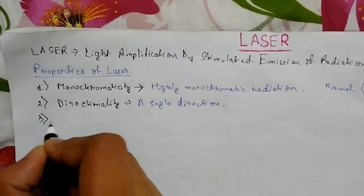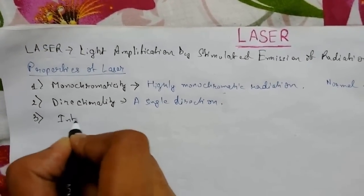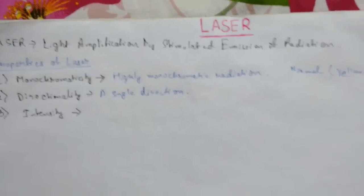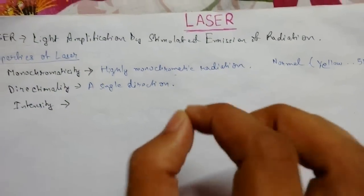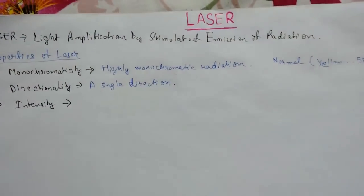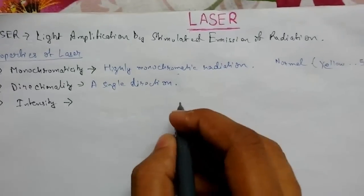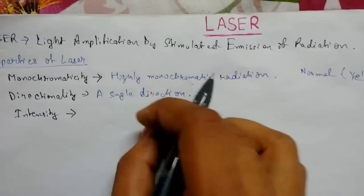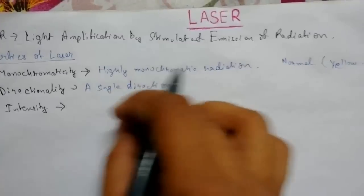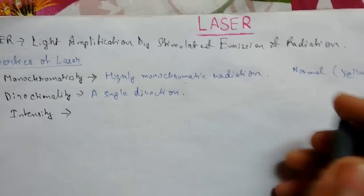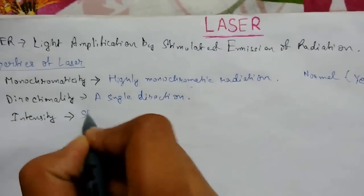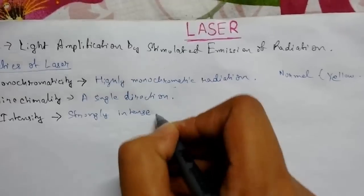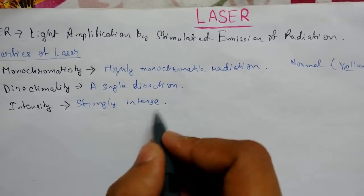Number three, we have intensity. Laser is highly intense. Laser light emits a narrow beam of light. The energy of the laser beam is concentrated in a small region, hence the laser beams become strongly intense. Normal light is not that intense.